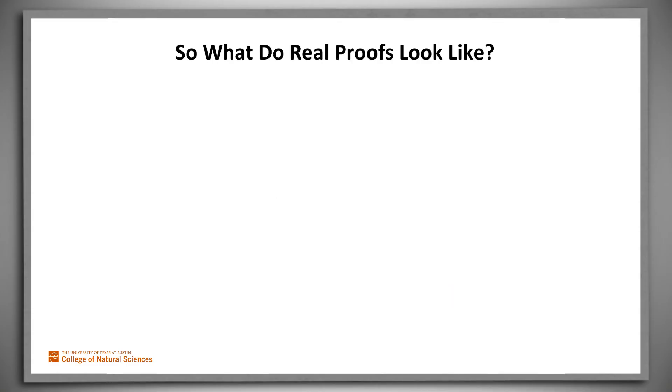So what do real proofs look like? Well, first, they rarely look like 4-column proofs. They sound like English, although perhaps a bit stilted English, with many more therefores, sinces, thuses, hences, and such used than we regularly observe.